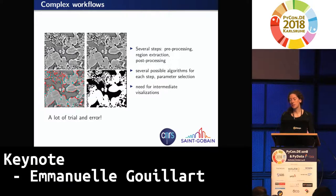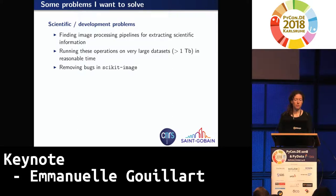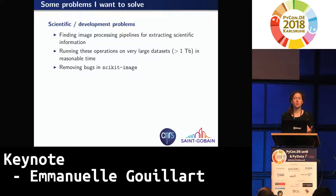You need to do pre-processing, then extract regions, then do post-processing. At each of those steps, you have several choices for the algorithm, but also parameter selection, which can be quite tricky. You also need to check at each step that you're doing the right thing, because it's very easy when designing a new pipeline to introduce bugs. You need both tests, but also a lot of intermediate visualizations. There is quite a lot of trial and error associated with this workflow.